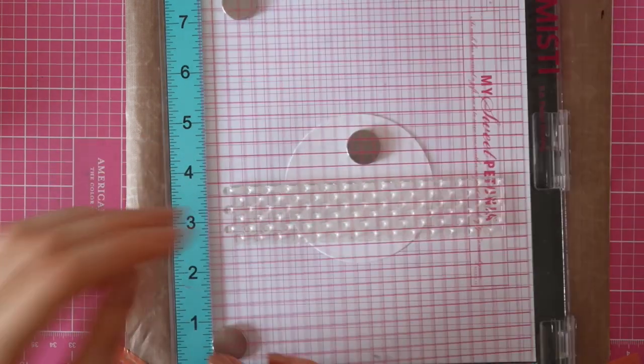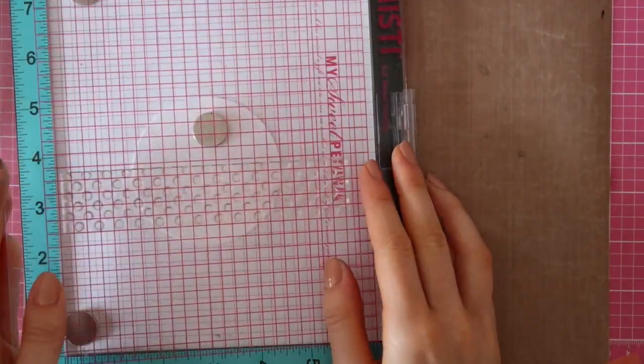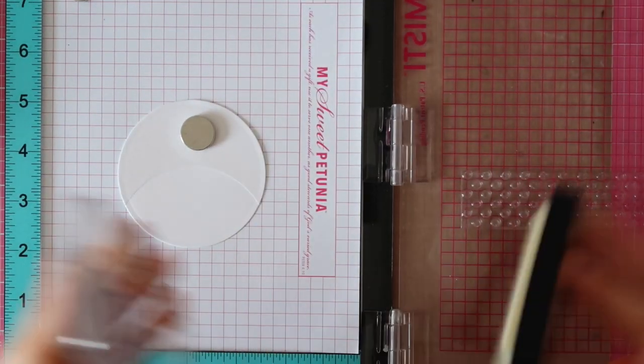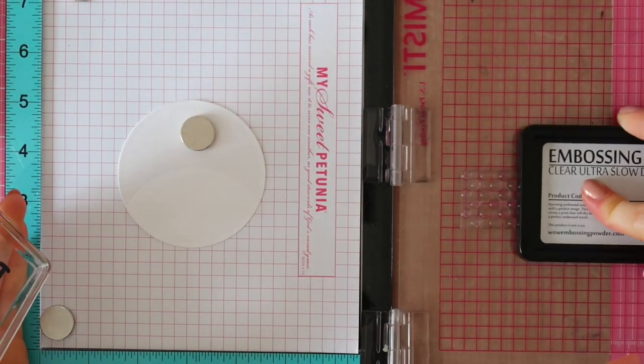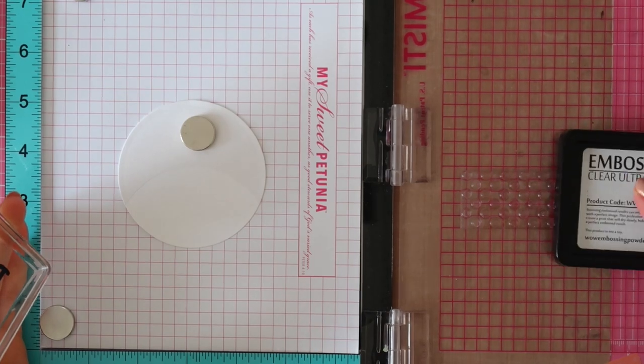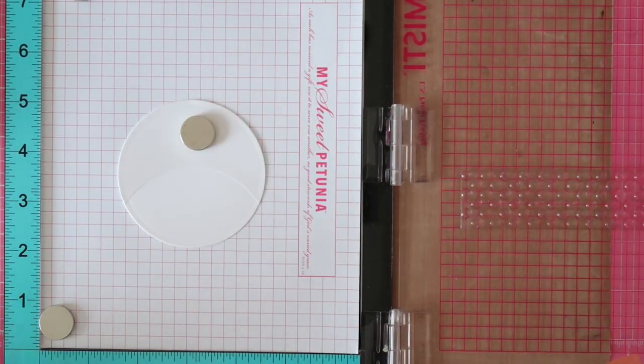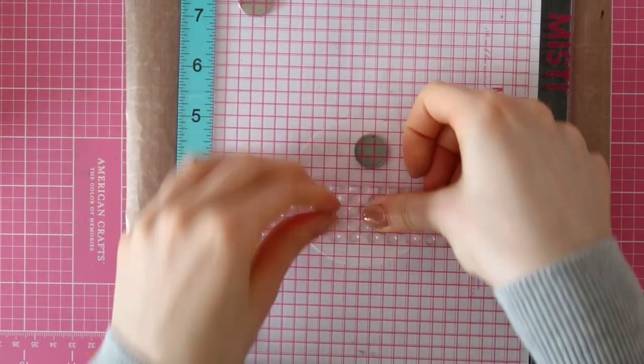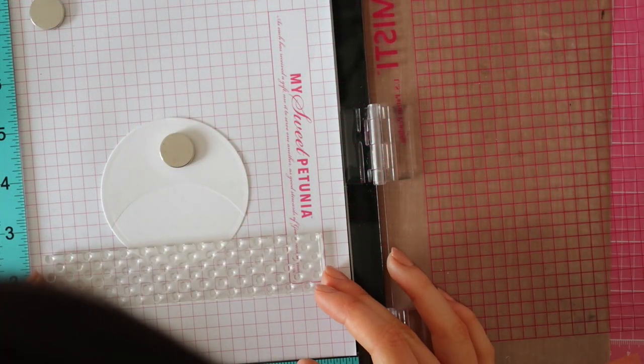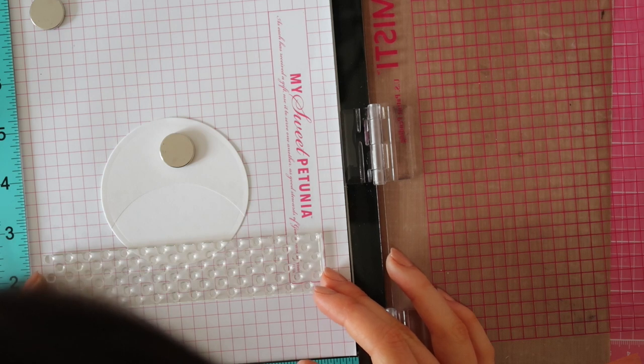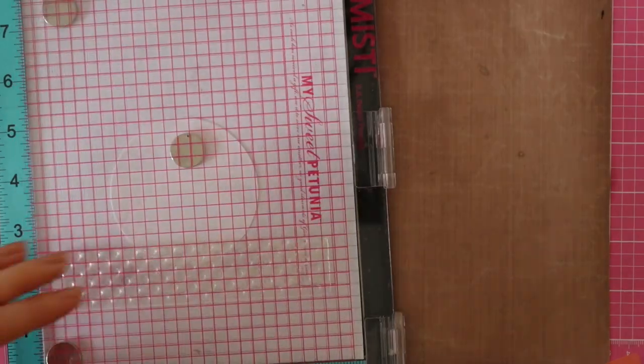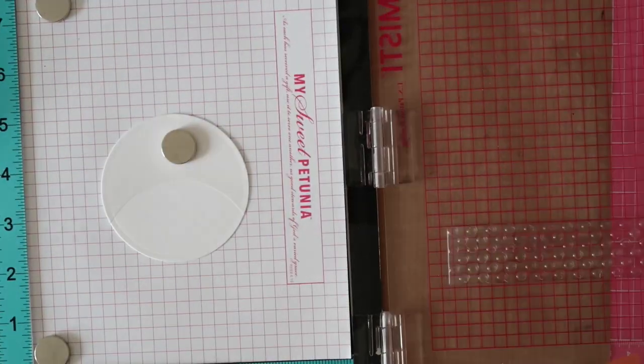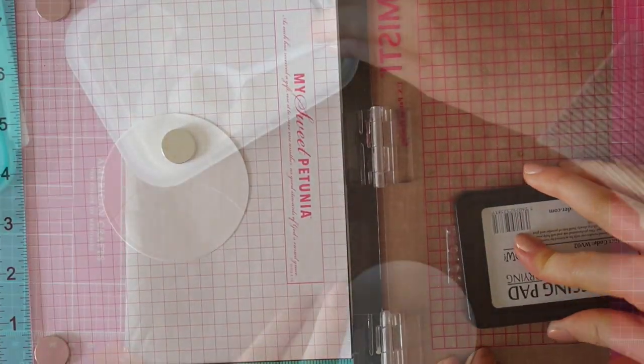I'm using the Background Basics stamp set to create some or to add some pattern to this grassy hill. I'm using the polka dot background and I'm stamping it on my white cardstock using the WOW Ultra Sticky and Slow Drying pads. I'm going to stamp and line up this border once again since it's a little bit too short to cover up the entire hill.